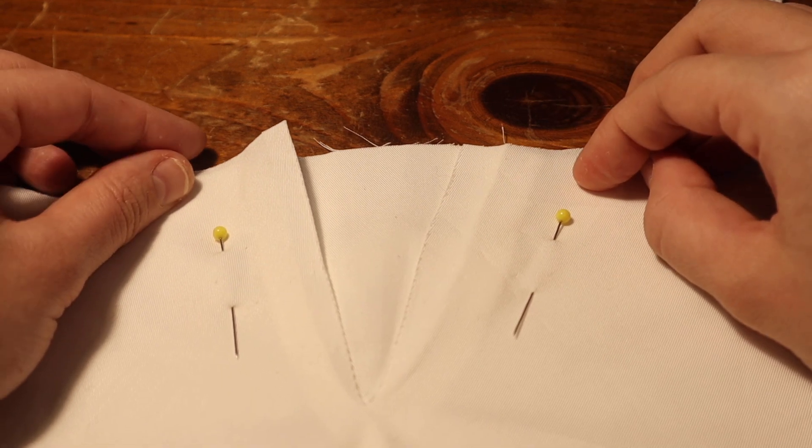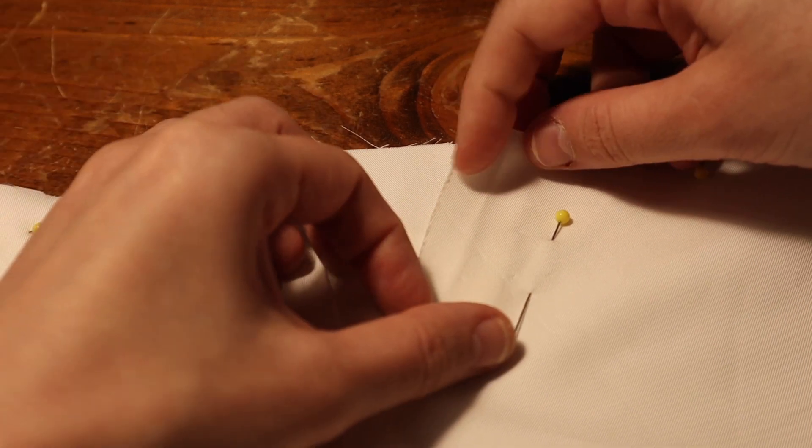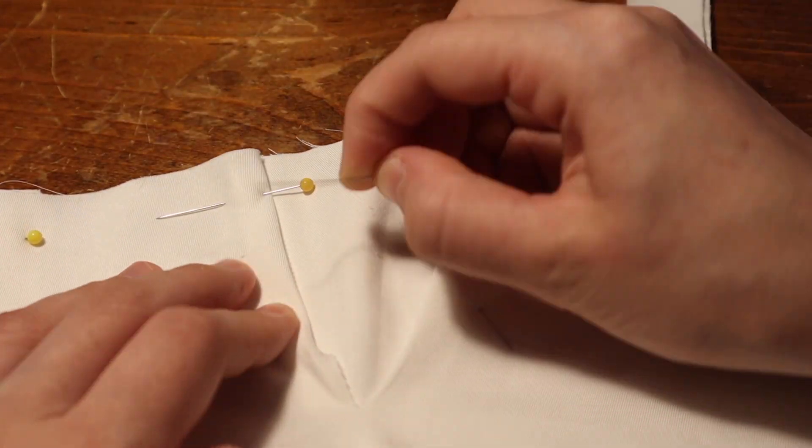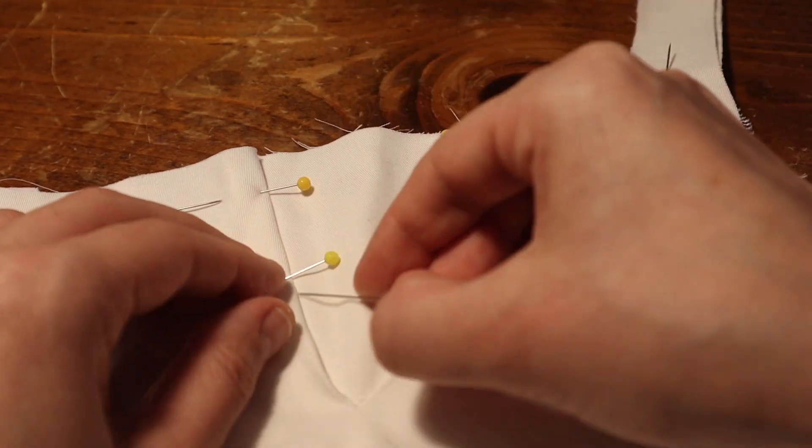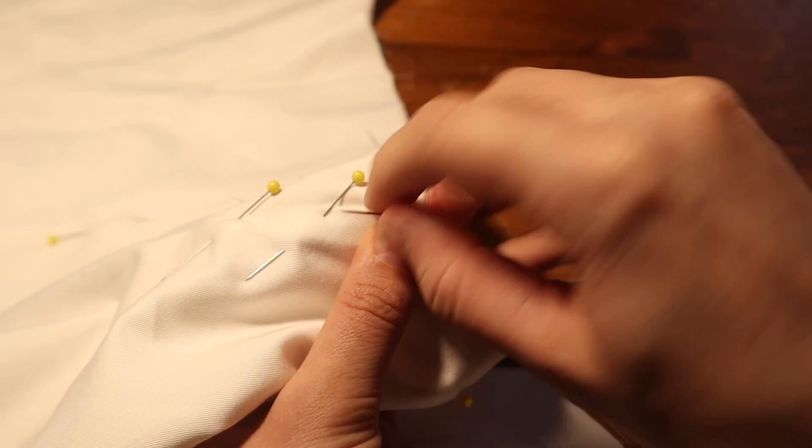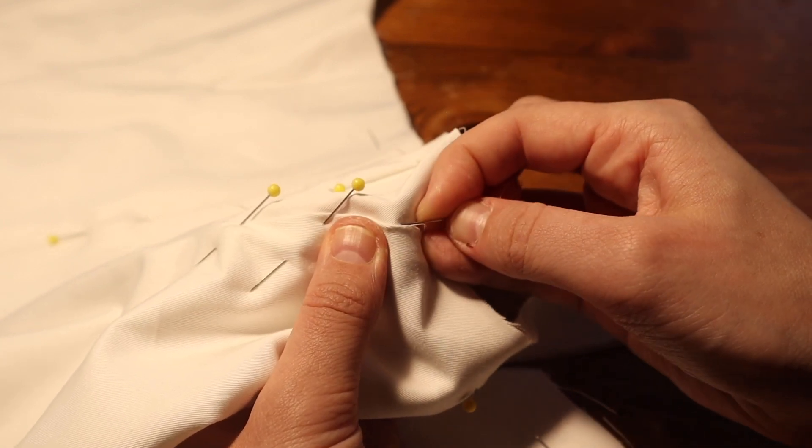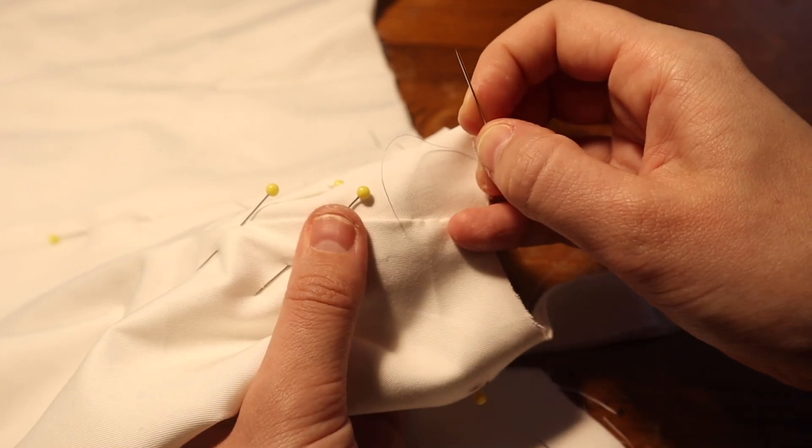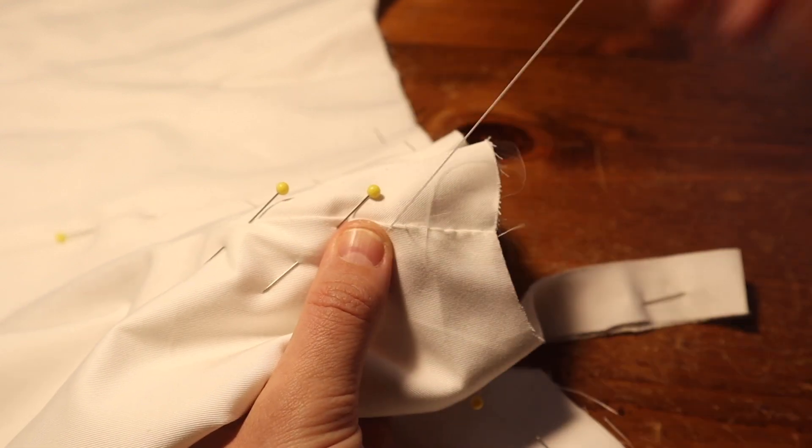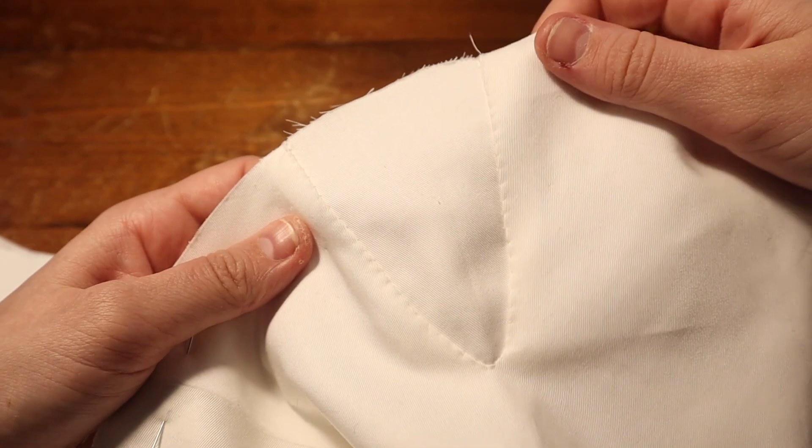Now I'm going to attach the lining around the gussets. Once again, I'm showing you just one gusset, but this is the same technique for all of them. I start by folding the seam allowance and matching it up with the stitch line that I can see from when I stitched the outside of the gussets. The lining is then secured with a felling stitch. Be careful not to go all the way through to the outside of the stays. And the finished gusset is nice and neat.